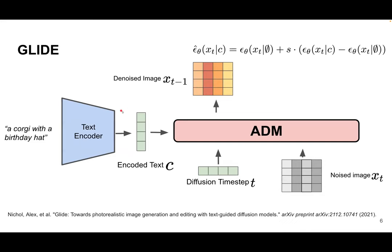Last week we talked about GLIDE. Basically in GLIDE, they adapted conditional diffusion models to be more suitable for text-to-image generation by substituting the class vector with encoded text. You have a text prompt like 'a corgi with a birthday hat,' pass it through a BERT-like encoder transformer, and use the encoded text as input to the diffusion model to create photorealistic images. This was also trained with classifier-free guidance, substituting the class Y with the caption.